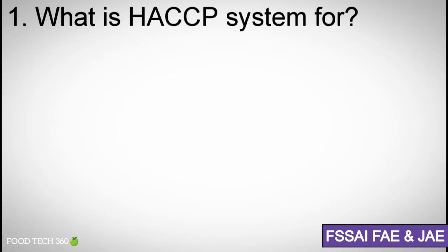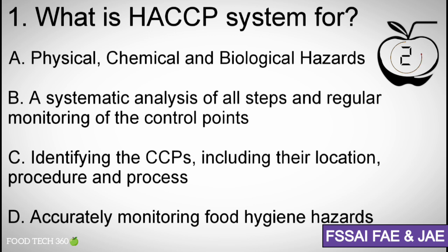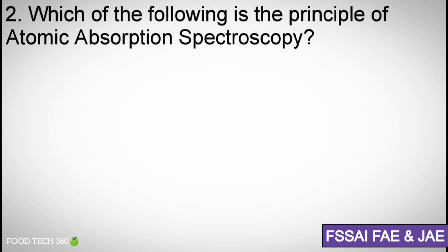Question number one: What is HACCP system for? Options: (a) Physical, chemical and biological hazards. (b) A systematic analysis of all steps and regular monitoring of the control points. (c) Identifying the CCPs including their location, procedure and process. (d) Accurately monitoring food hygiene hazards. Correct answer: (b) A systematic analysis of all steps and regular monitoring of the control points.